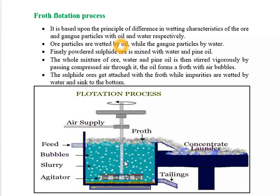Here you can see — the mixture is stirred vigorously by passing compressed air, as the compressed air supply is shown here. The oil forms froth with air bubbles, and the sulphide ore particles get attached to the froth. As the froth is lighter, it floats on the surface, while the gangue or earthy impurities are wetted by water and collect at the bottom of the tank. The floating froth is then transferred into settling basins from where concentrated ore is recovered, and the gangue particles are collected at the bottom.